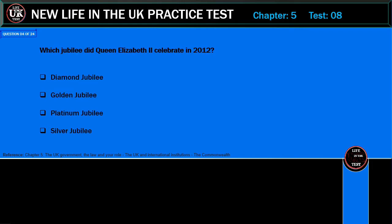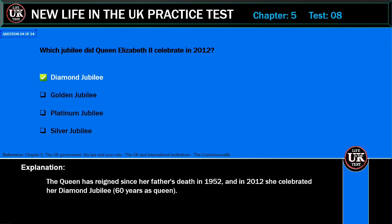Which jubilee did Queen Elizabeth II celebrate in 2012? Diamond Jubilee, Golden Jubilee, Platinum Jubilee, or Silver Jubilee? Correct answer: Diamond Jubilee. Explanation: The Queen has reigned since her father's death in 1952, and in 2012 she celebrated her Diamond Jubilee — 60 years as Queen.